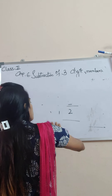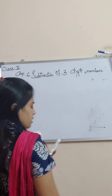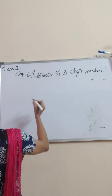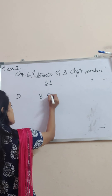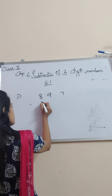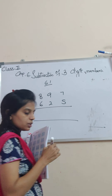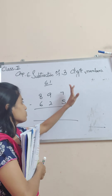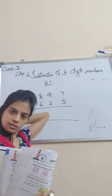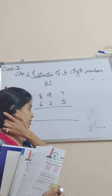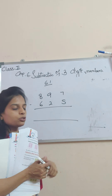Now, let us do Exercise 6.1. The first one is 897 minus 625. As I said, children, you will start with one's place. 7 minus 5. After 5, count till 7: 6, 7. 2 fingers.